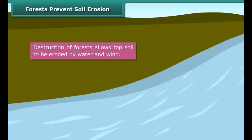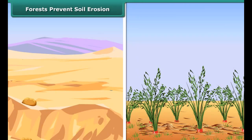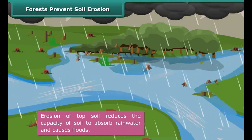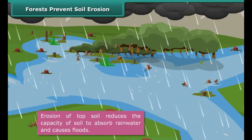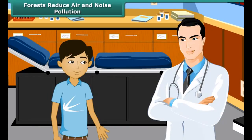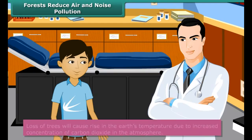Lena comes across a headline in the newspaper: 'Lack of forest cover leads to flash floods.' She is eager to know the connection between forests and floods. Roots of plants not only fix them to the soil but also bind the soil together. When forests are destroyed, the topsoil becomes loose and is eroded by water and wind. This causes an increase in desert land and reduces the fertility of the soil. Erosion of topsoil also reduces the capacity of soil to absorb rainwater, and as a result, there are floods.